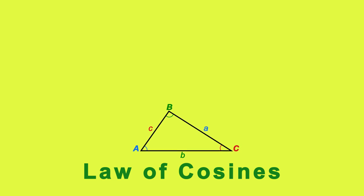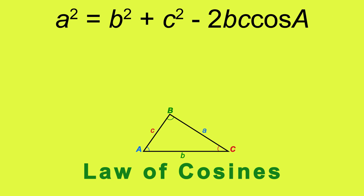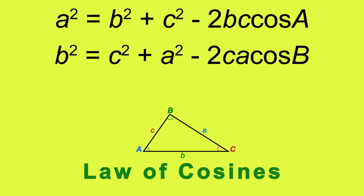The law of cosines states that A squared equals B squared plus C squared minus 2BC times the cosine of angle A. Alternative forms are B squared equals C squared plus A squared minus 2CA times the cosine of angle B.